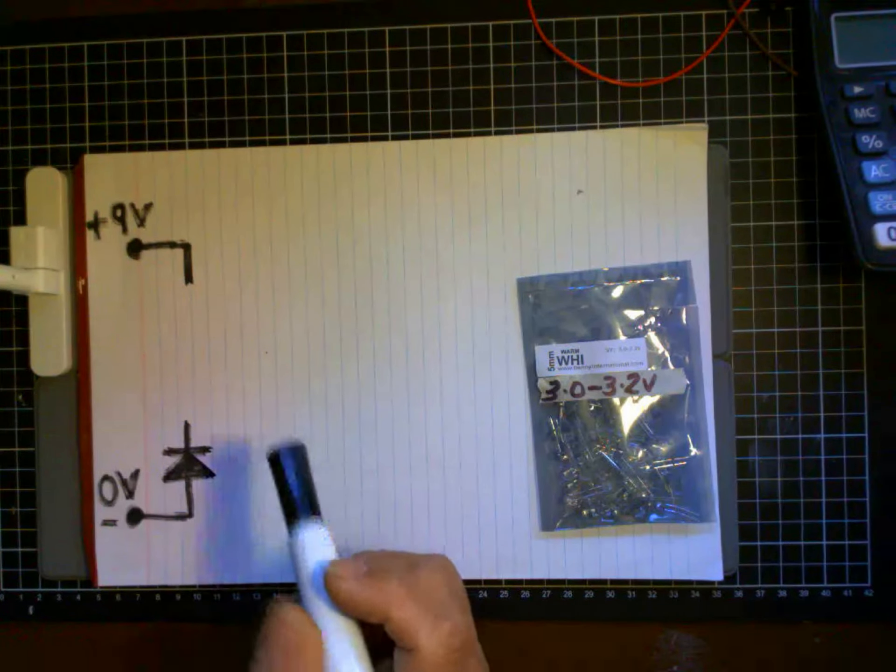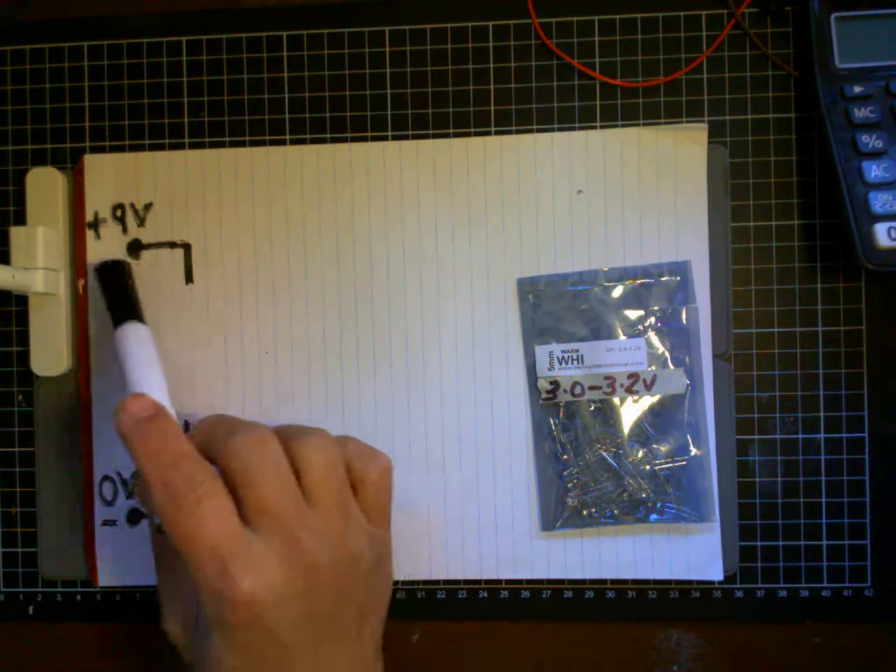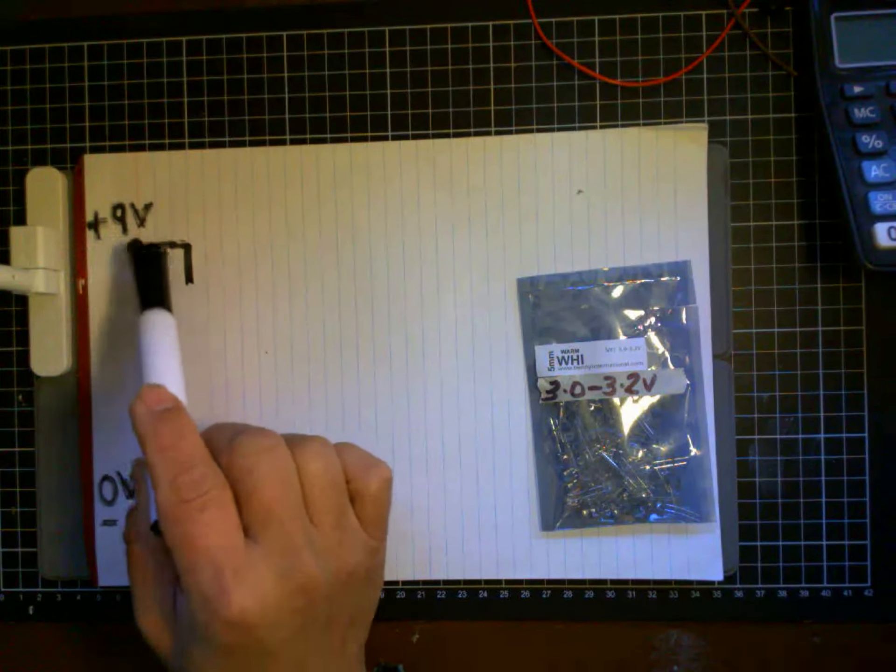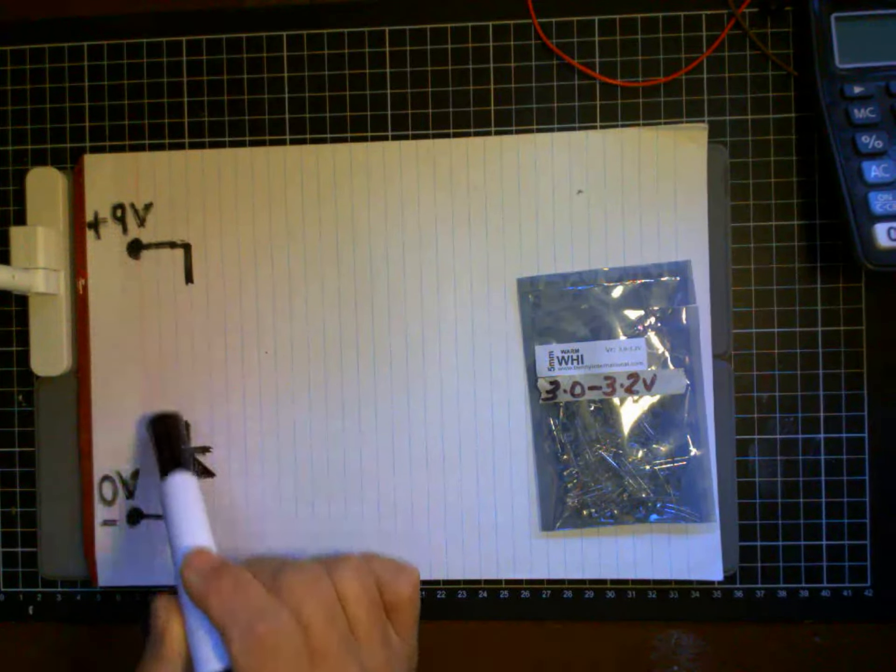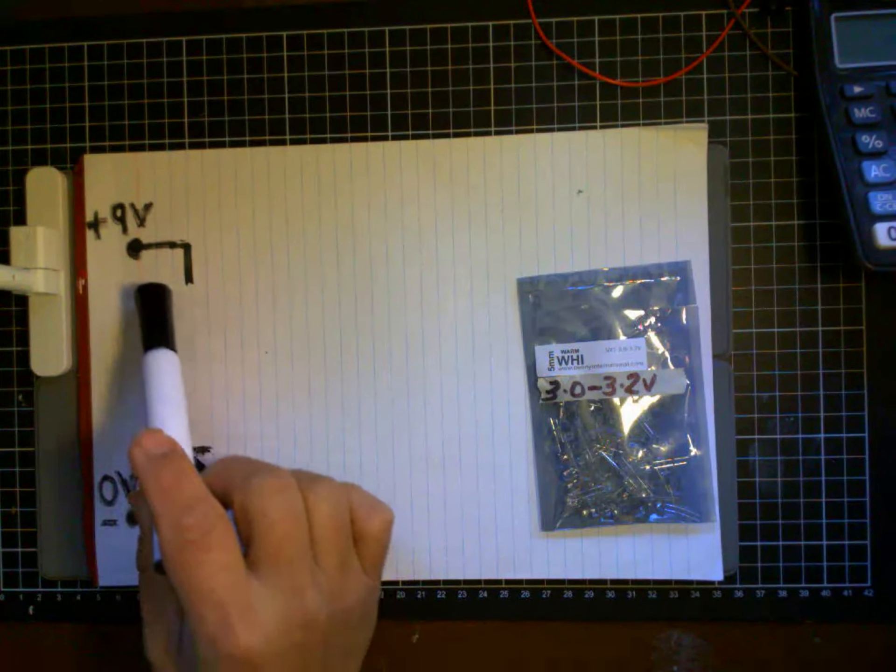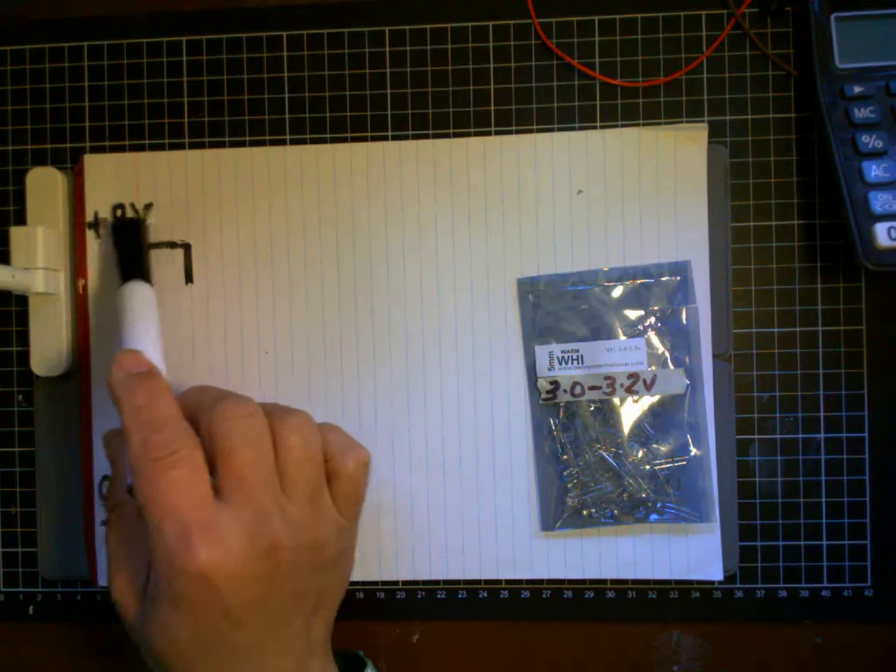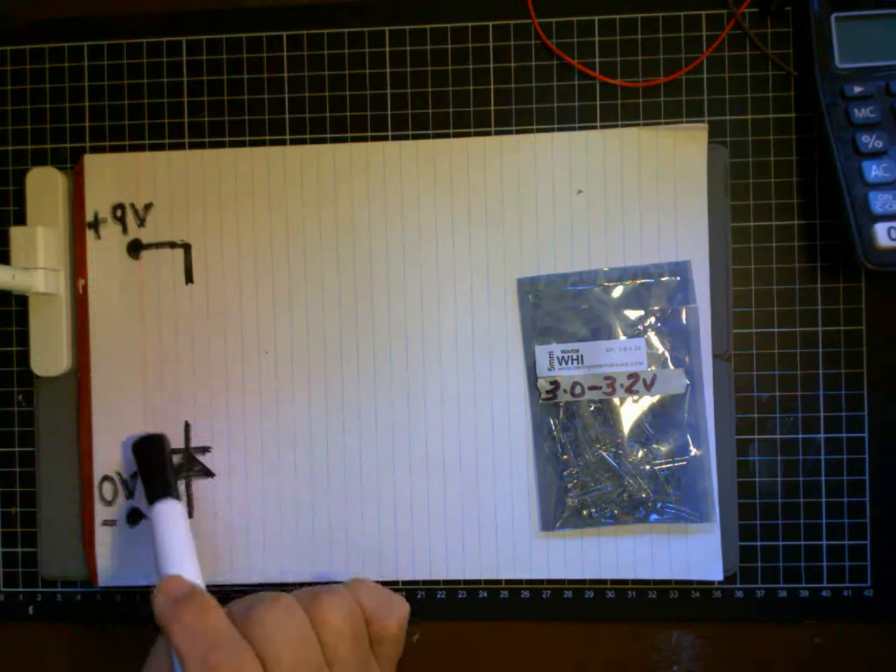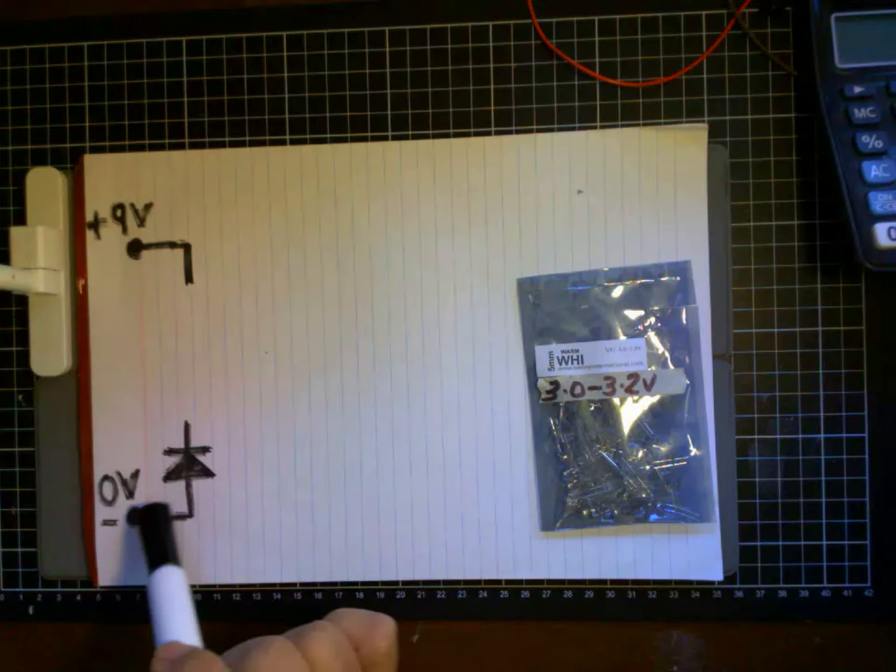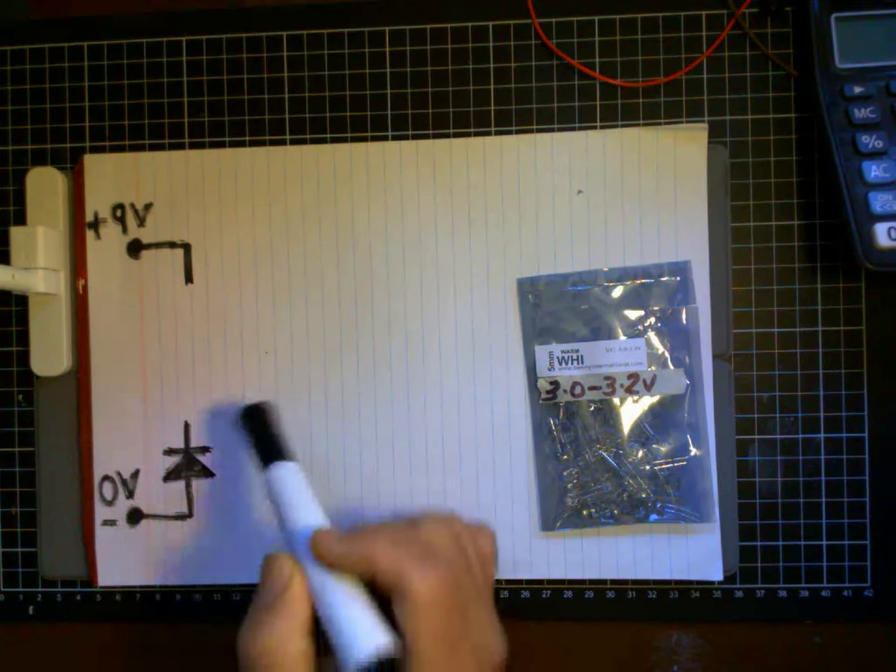Here I have another representation of a battery with my positive terminal here and negative terminal down here. Because we are using 9 volt batteries, I'm showing that this potential here is at 9 volts, and as the power is used up you go under 0 volts down here.